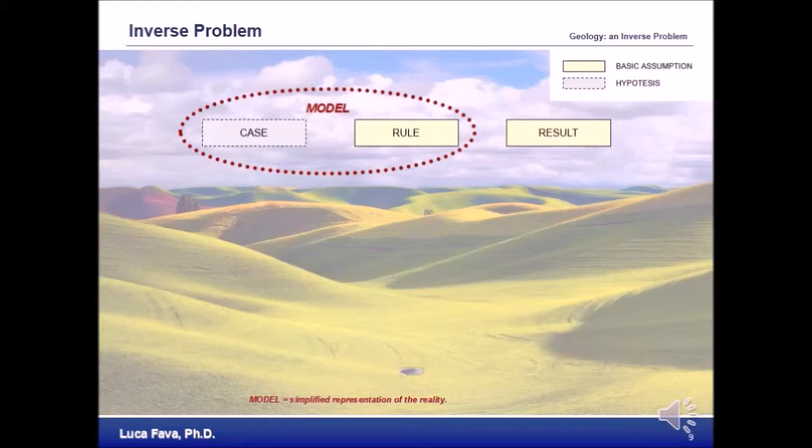You can see immediately, by yourself, that an inverse problem is far more complicated than a forward model. In this case, we don't have any control on the initial conditions. They can be only guessed, and we don't know if the rule that we are assuming is actually correct.